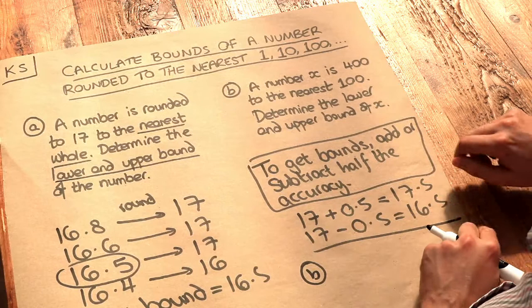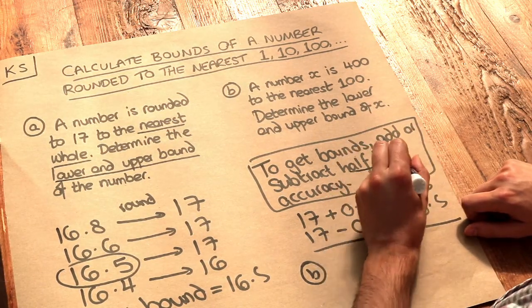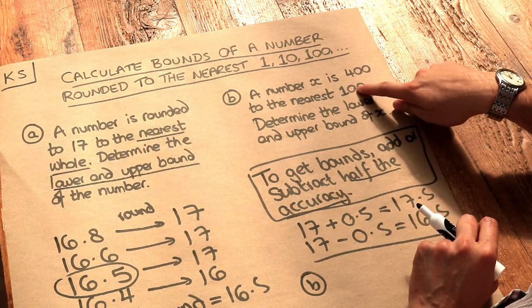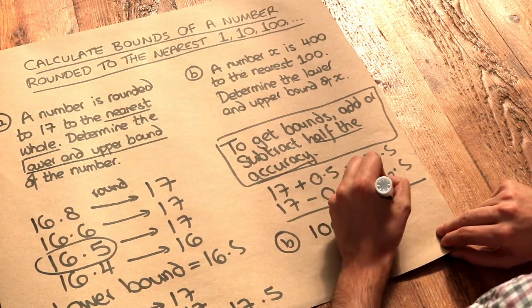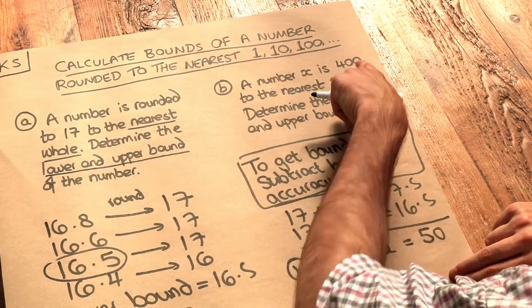the accuracy here is the nearest 100. And we want to add or subtract half the accuracy. If the accuracy is the nearest 100, we halve that, which is 50. So the accuracy divided by 2, half of it is 50. And then we're going to add or subtract that 50 to the original number.